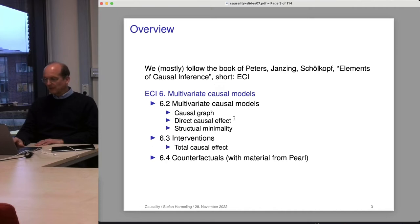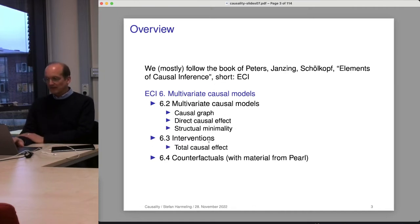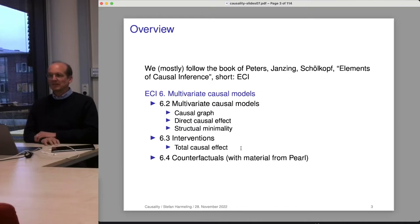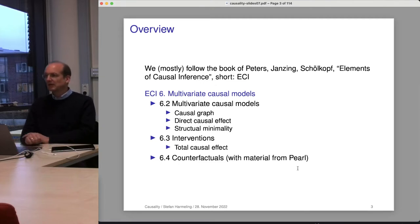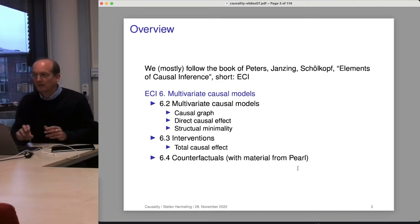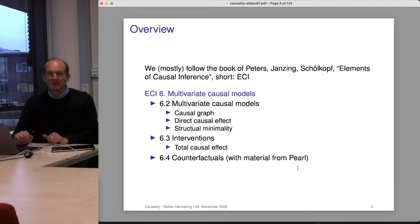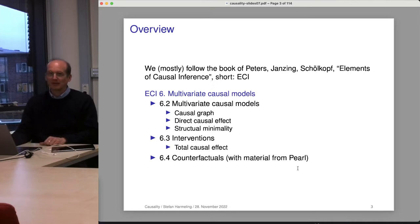First we introduce causal graphs, direct causal effects, and structural minimality — a couple of new notions. Then we talk about interventions and define the total causal effect. We will also talk about randomizing a random variable, what that means, and there's a nice historical example. Finally, we talk about counterfactuals where I mixed in some material from Pearl's book, which typically provides lots of additional information — though not always, as sometimes there are missing explanations in someone else's text.